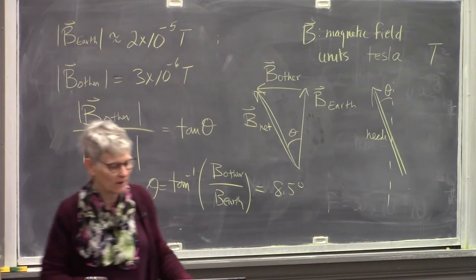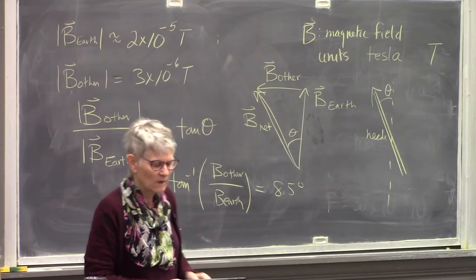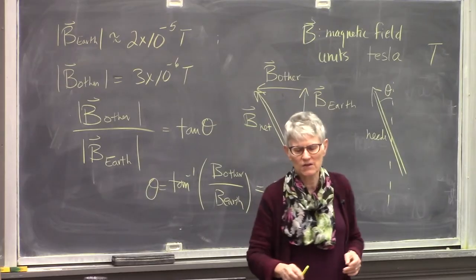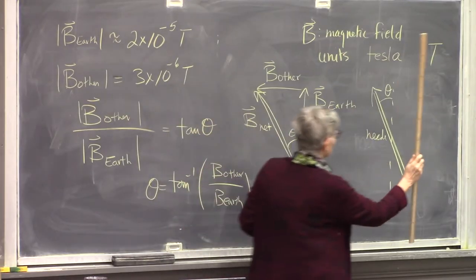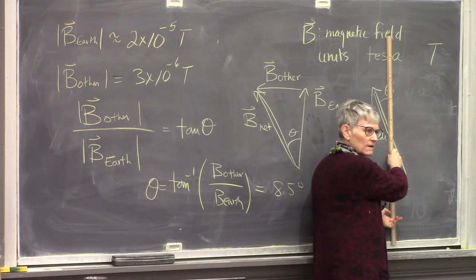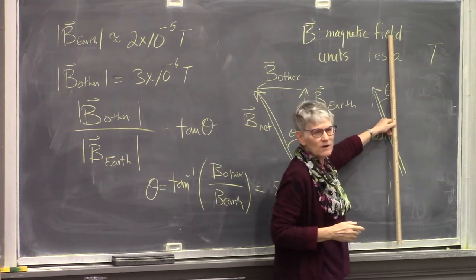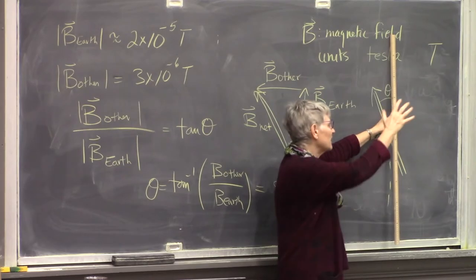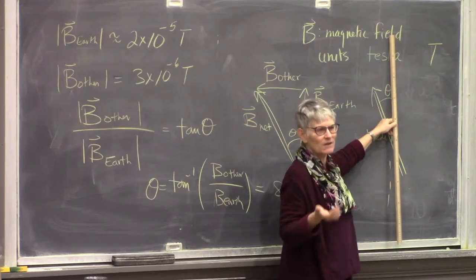Now, the fact that we'd get a deflection by putting a current-carrying wire on top of our compass — which is already aligned with Earth's magnetic field — suggests that the magnetic field made by the current in the wire, underneath the wire where the compass is, is actually perpendicular to the wire.